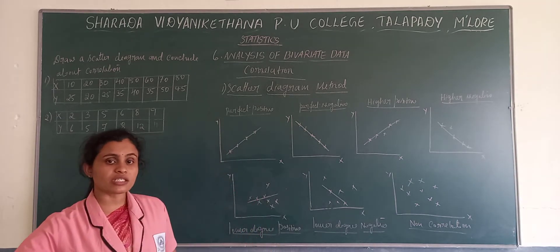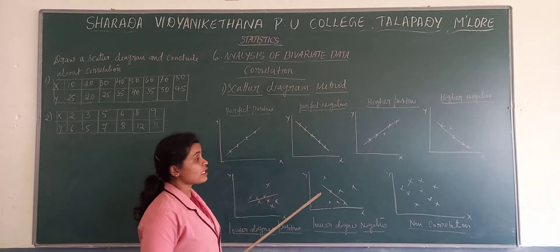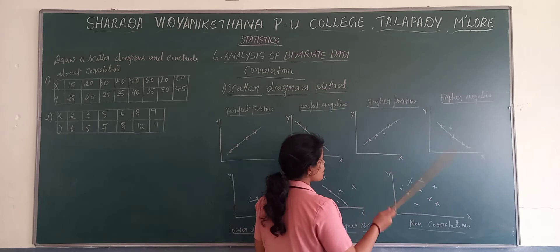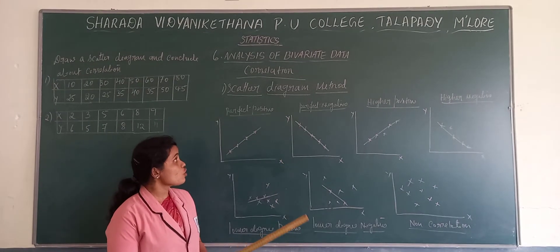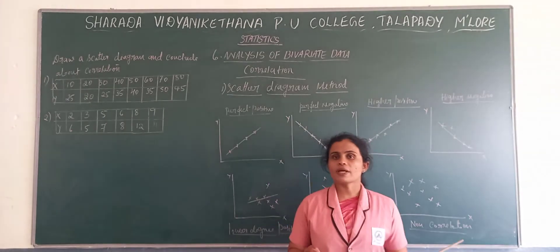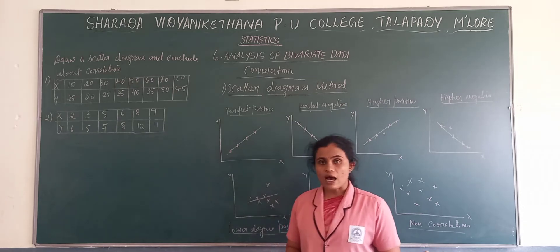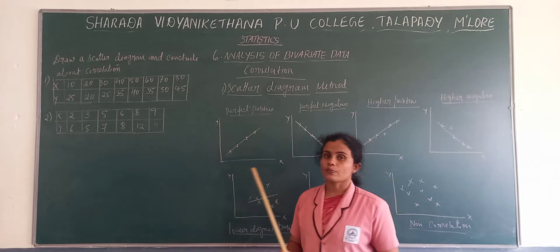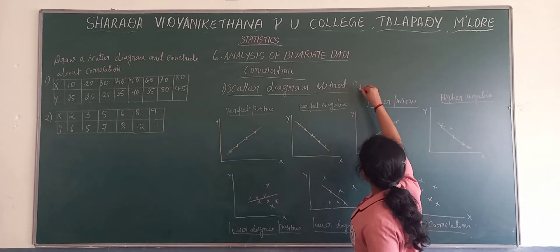In the scatter diagram method, we are measuring the correlation using a diagram — a scatter diagram — where the points will not be in a proper manner; they are scattered around the graph. It is a non-mathematical method of measuring correlation. It is a graph-based, non-mathematical method of measuring correlation.